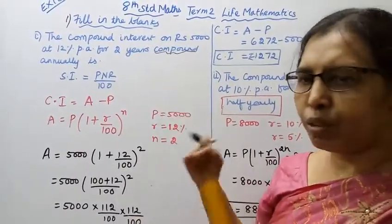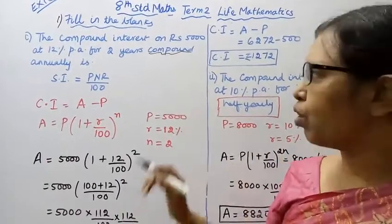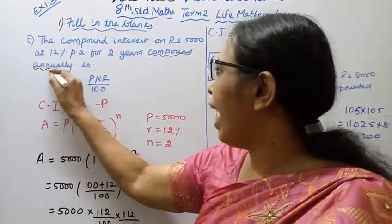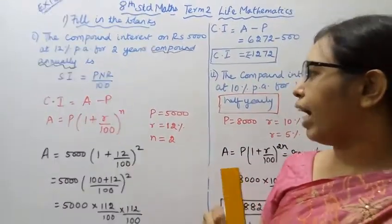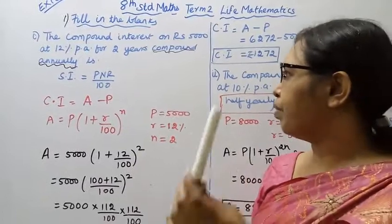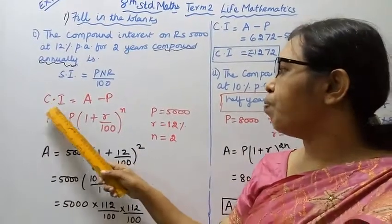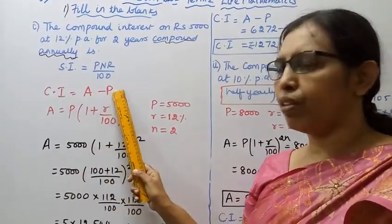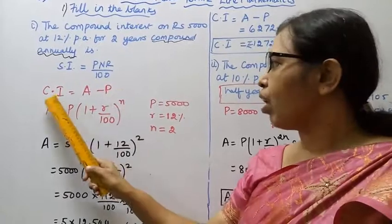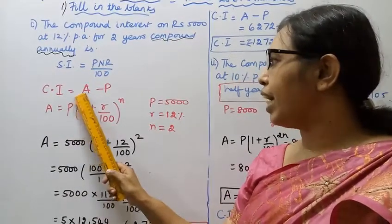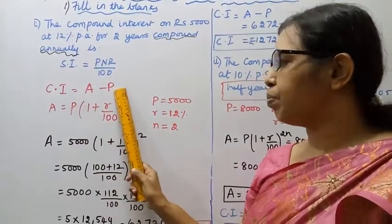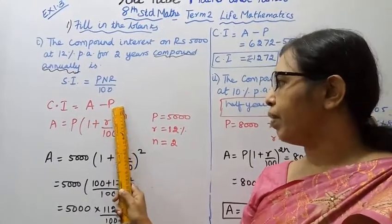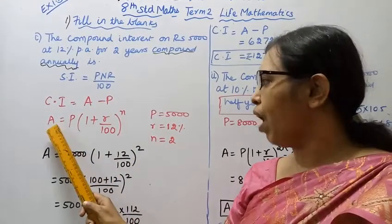The compound interest formula: Amount minus Principal. The compound annual amount by principal gives you the compound interest.